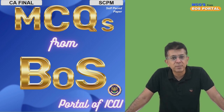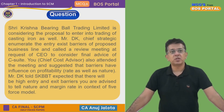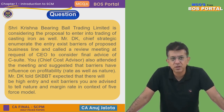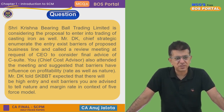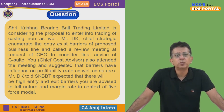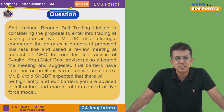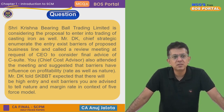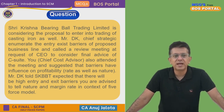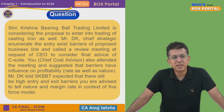Today's question: Shree Krishna Bearing Ball Trading Company is considering a proposal to enter into the trading of cast iron as well. Mr. DK, Chief Strategic Officer, enumerates the entry and exit barriers of the proposed business line and calls a review meeting at the request of the C-suite — which includes the CEO, CFO, and others. You, the chief cost advisor, also attended the meeting. Mr. DK expects there will be high entry and exit barriers, and you are advised to tell the nature and the margin rate in context of the Five Forces Model.